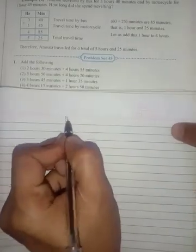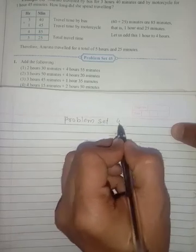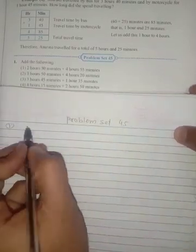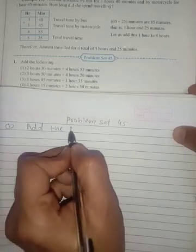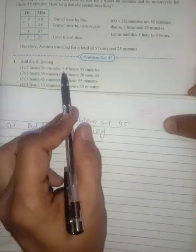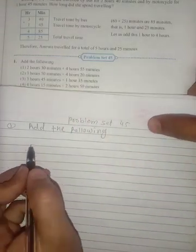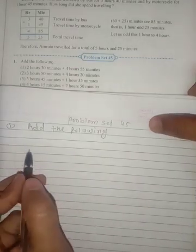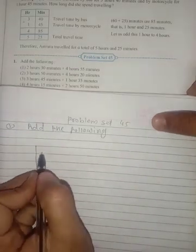Problem Set 45, first question is add the following. So first question is 2 hours and 30 minutes plus 4 hours and 55 minutes. First we are drawing a table like that right here, HR and minute.